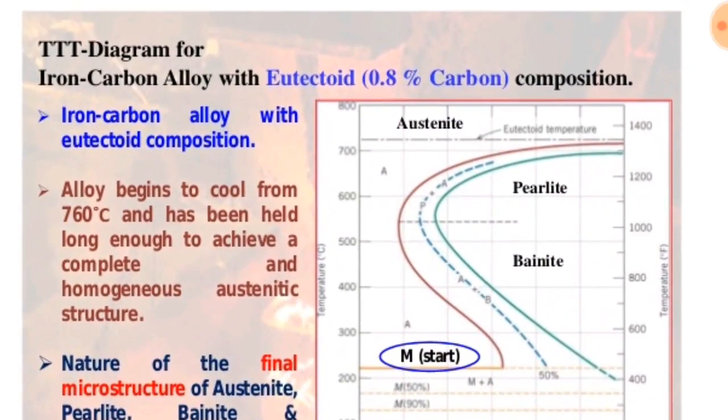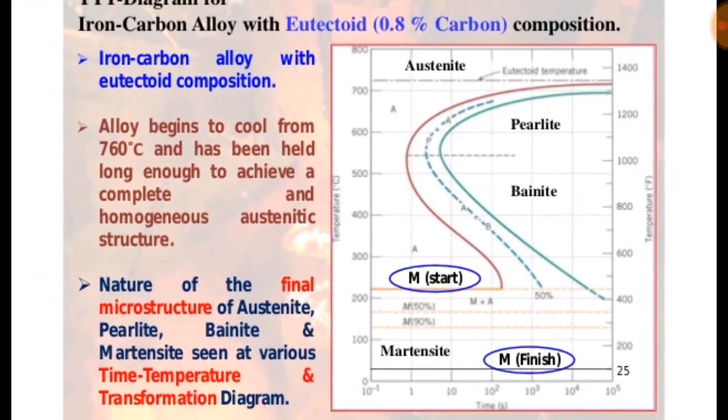The TTT diagram of eutectoid 0.8% carbon composition is shown in this diagram.